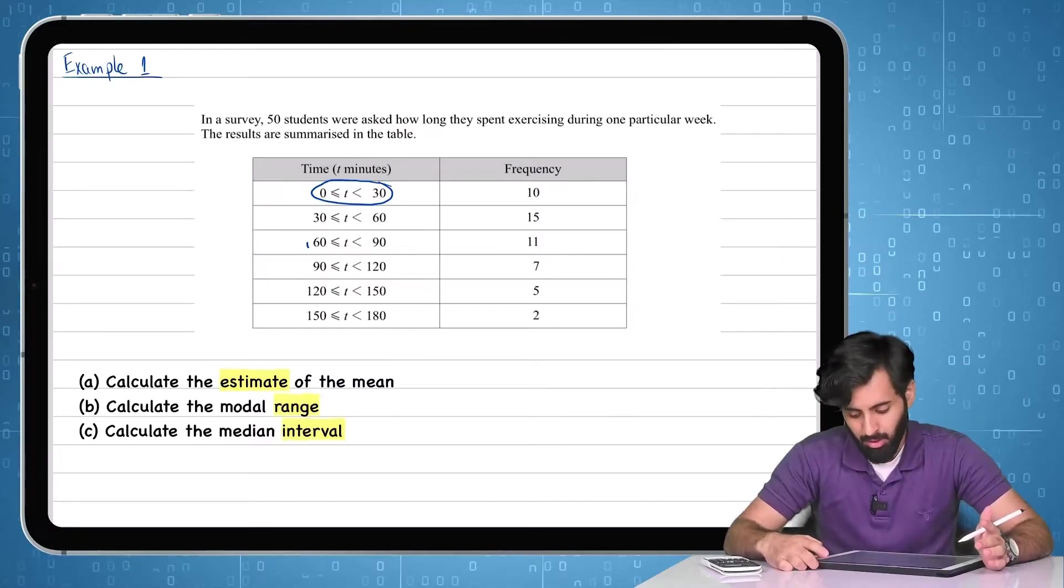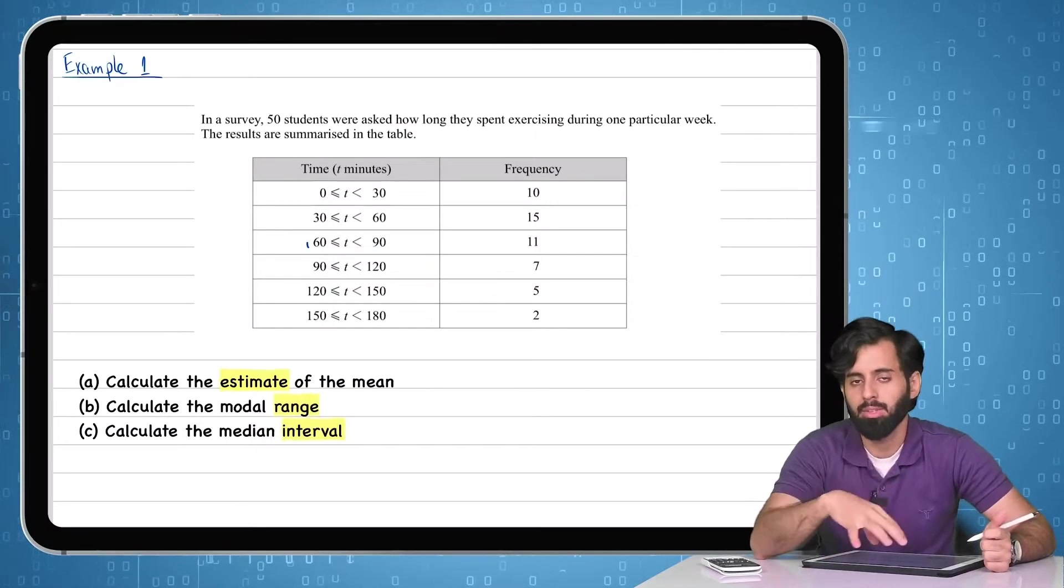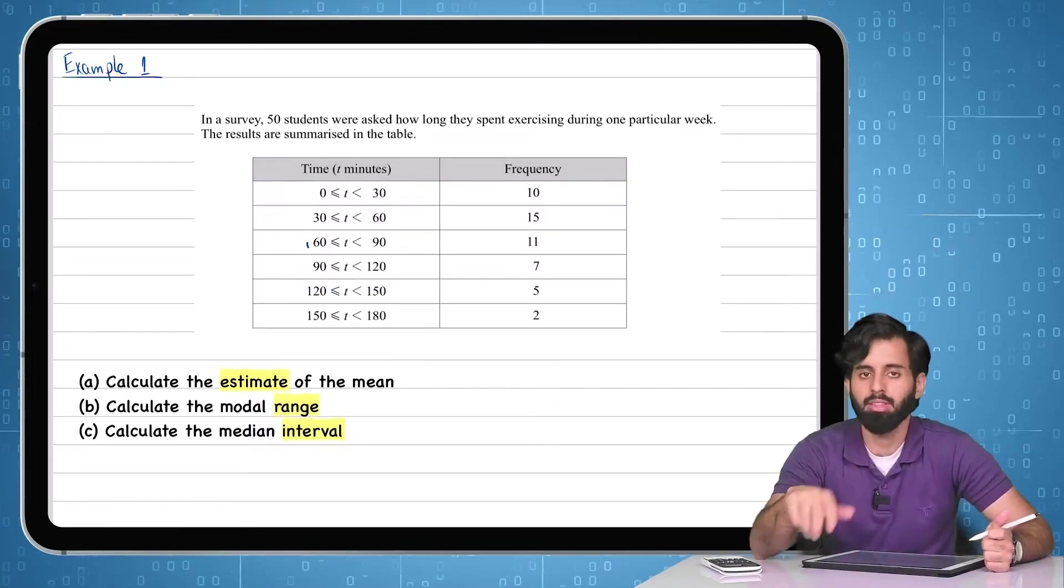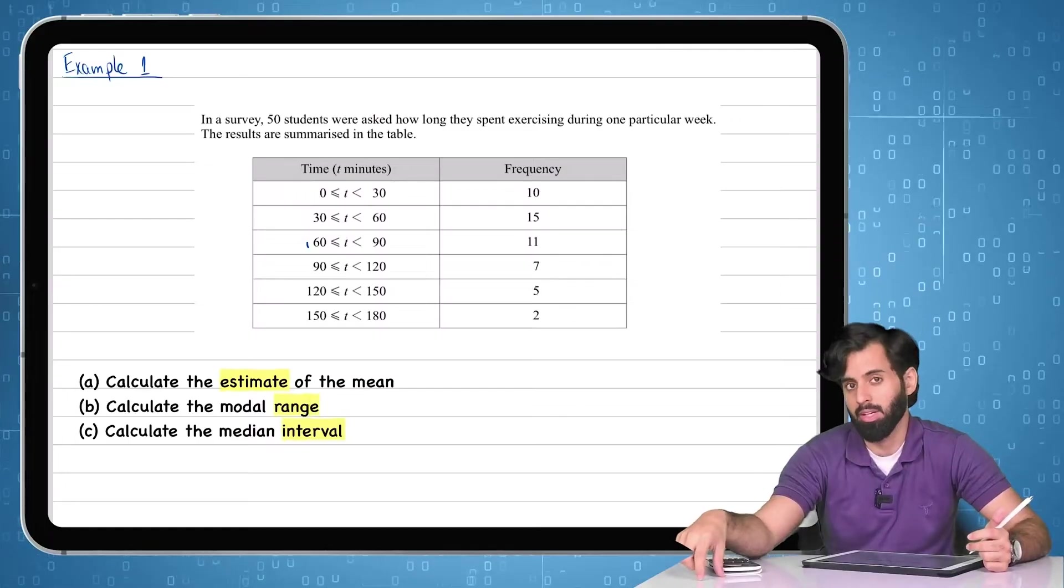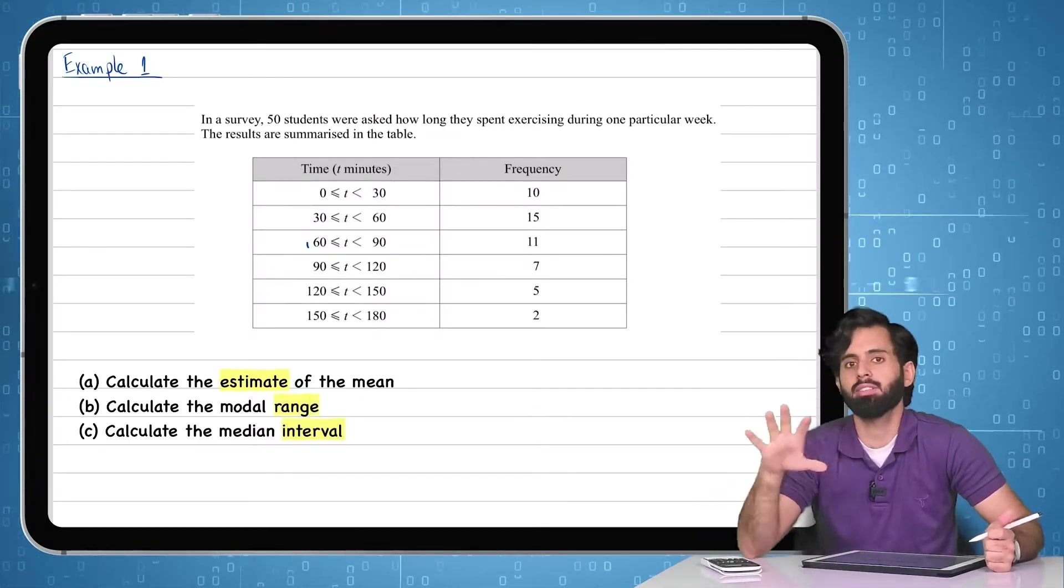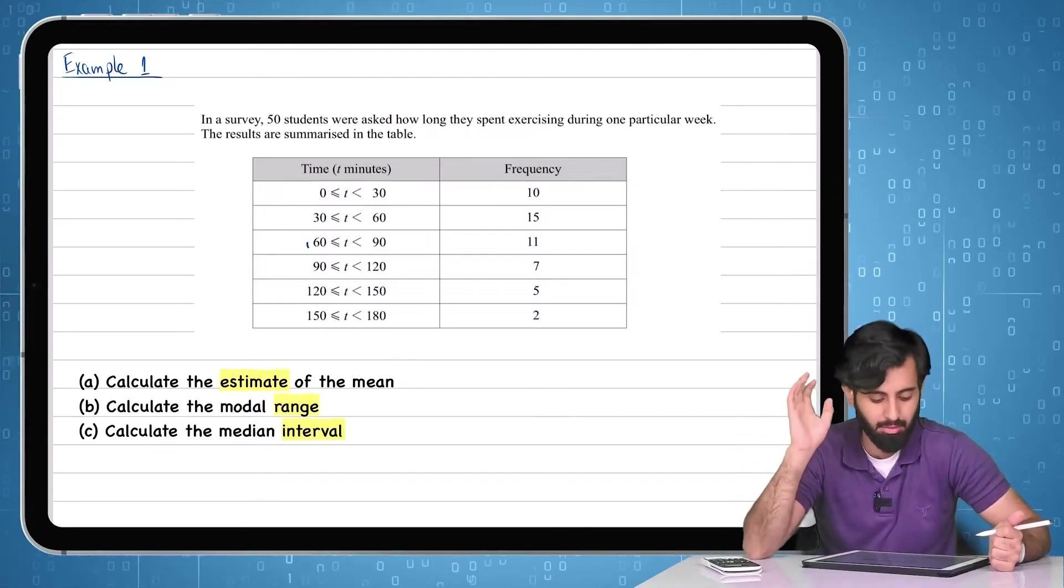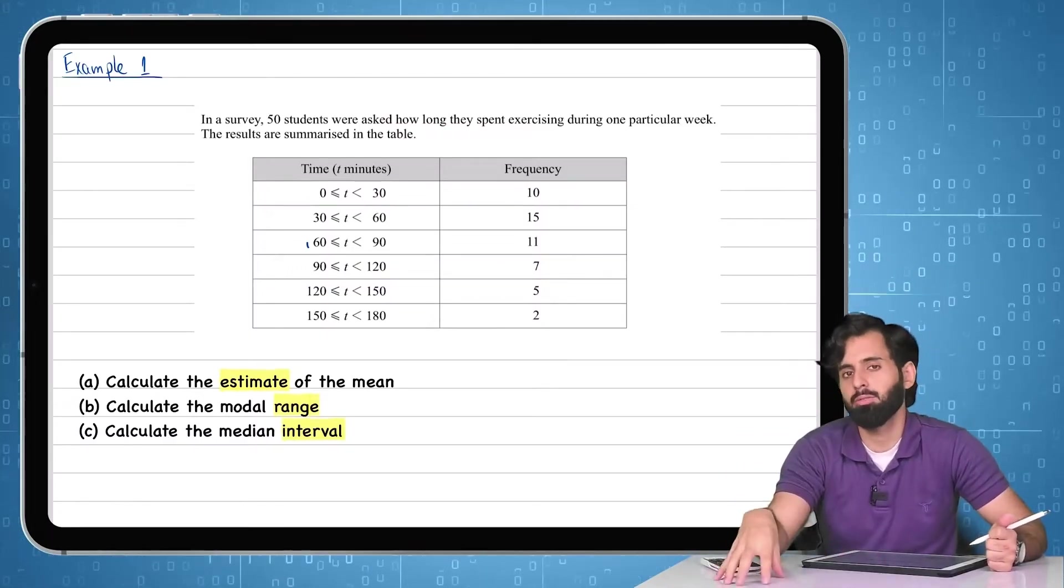So why is it absolutely necessary to have grouped data over here? The reason for that is because this data starts from zero and goes all the way to 180. Now, in between 0 to 180, you can have hundreds and thousands of values. You can have them in decimals, by the way. So if you just look at from 0 to 30, you can have so many values between zero and 30.